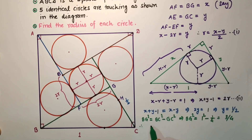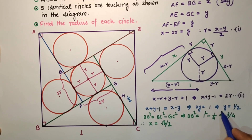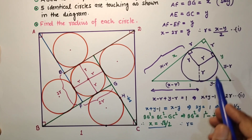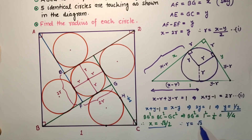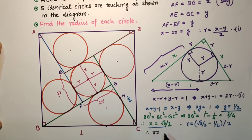Therefore BG is X, so X equals the square root of 3/4, which is root 3 over 2. Now after getting X and Y we can find R. Therefore R equals (X minus Y) divided by 2, which is (root 3 over 2 minus 1/2) divided by 2, and finally R equals (root 3 minus 1) divided by 4.